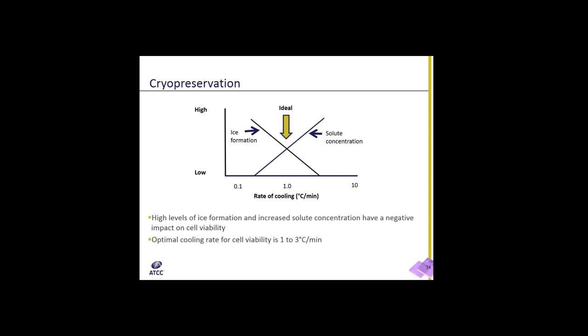In effect, very fast and very slow freezing rates have consequences, either in excessive ice formation or increased solute effects. Cryoprotectants, most commonly DMSO, encourage dehydration, minimize ice crystallization, and reduce solution effects. For most cells, the optimal rate of freezing is between 1 and 3 degrees Celsius per minute. As you can see in the diagram shown, at this temperature range, the negative impact of intracellular ice formation is at equilibrium with increased solute concentration. This is maximizing cell viability.